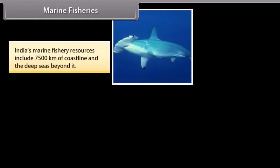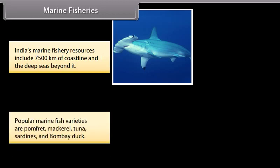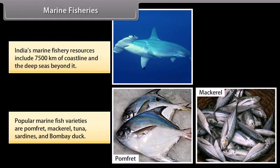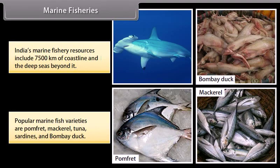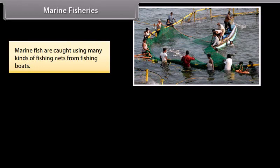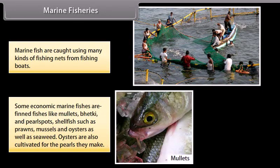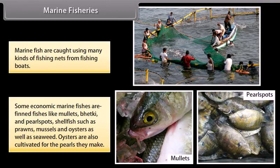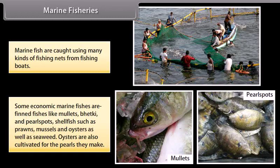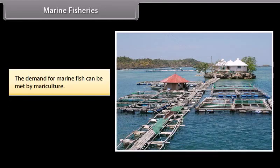India's marine fishery resources include 7,500 km of coastline and the deep seas beyond it. Popular marine fish varieties are pomfret, mackerel, tuna, sardines and Bombay duck. Marine fish are caught using many kinds of fishing nets from fishing boats. Some economically important marine fish are finned fish like mullets, betki and pearl spots, shellfish such as prawns, mussels and oysters, as well as seaweed. Oysters are also cultivated for the pearls they produce. The demand for marine fish can be met by mariculture.